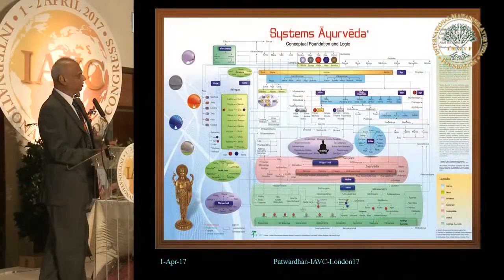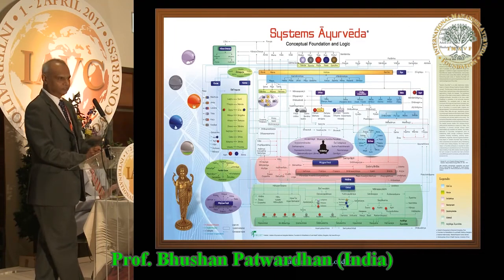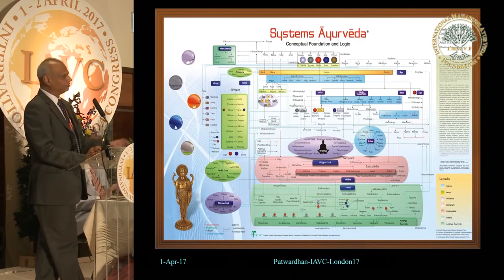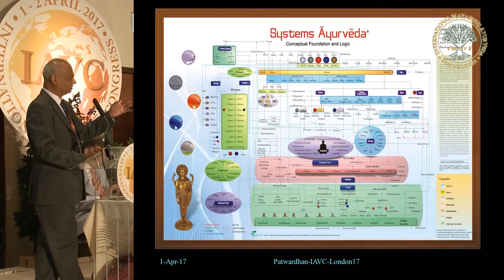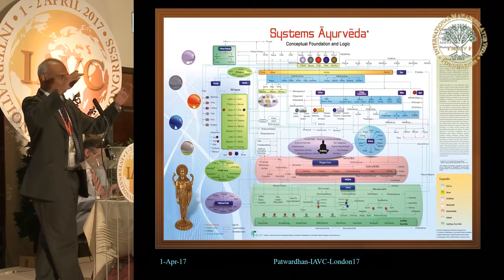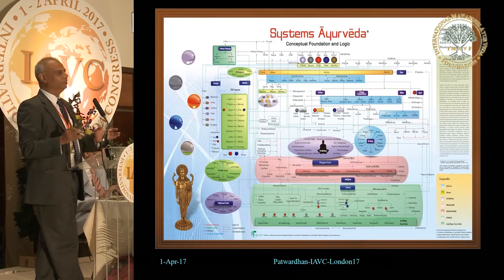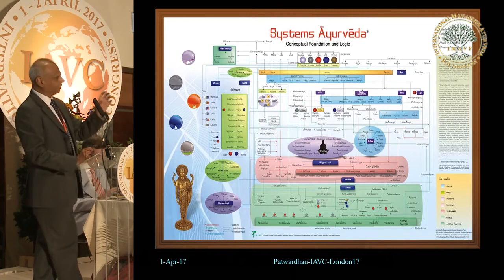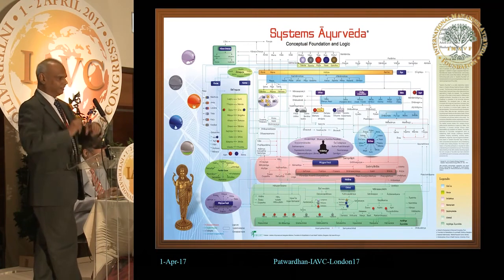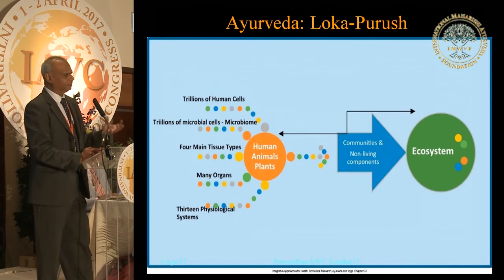This chart was created sometime in 2010. What you see on this chart is 230 knowledge points from Ayurveda, starting from abstract concepts — from Loka Purusha to Ashtanga Ayurveda. All these knowledge points — Panchamahabhuta, Tridosha, Agni — everything has been connected to each other in forward and backward linkages, with color codes and directions connecting all the logic of Ayurveda together.